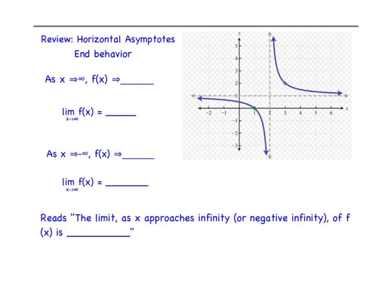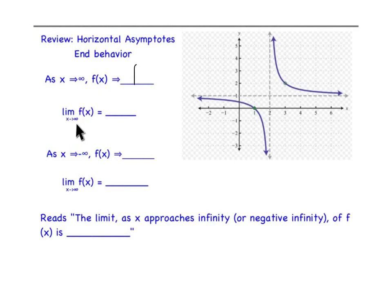As x goes to positive infinity — as x moves in the positive infinity direction — you can see that the graph is getting really, really close to the asymptote at y equals 1. So f of x is getting really, really close to 1, and it's getting close to 1 from above it. The limit notation says: the limit as x approaches infinity of f of x is 1.